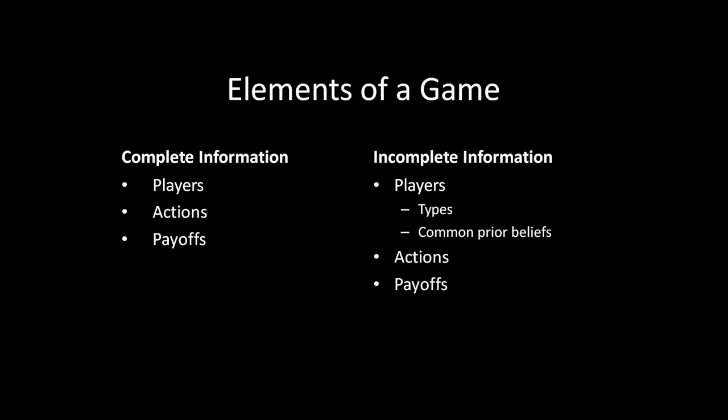With incomplete information, we have an extra layer of complexity. Not only do we have players, we have different types of players. Thinking back to the last lecture, a goalie could be facing a striker that is either more accurate to his left side or more accurate to his right side, and the goalie doesn't really know which type of striker he's facing. So we have types here.